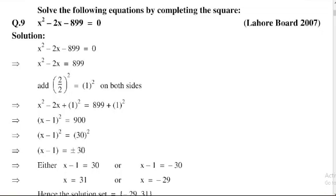Square root of (x - 1)² - the square and square root cancel, leaving x - 1 equal to ±√(30²). The square and square root cancel, so x - 1 = ±30.